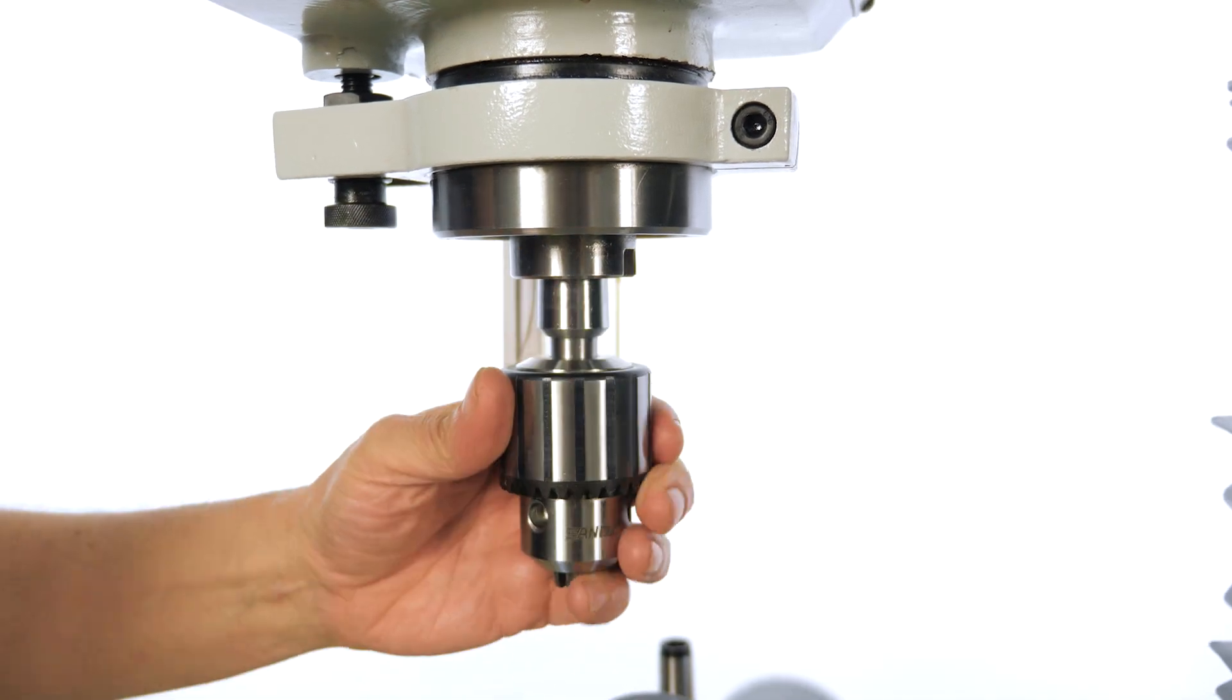Now we're going to show you just how easy it is to change the milling cutter to the drill chuck. Firstly you just loosen the draw bar on the top, give a light tap, remove the cutter, install your drill chuck and then tighten the draw bar again.